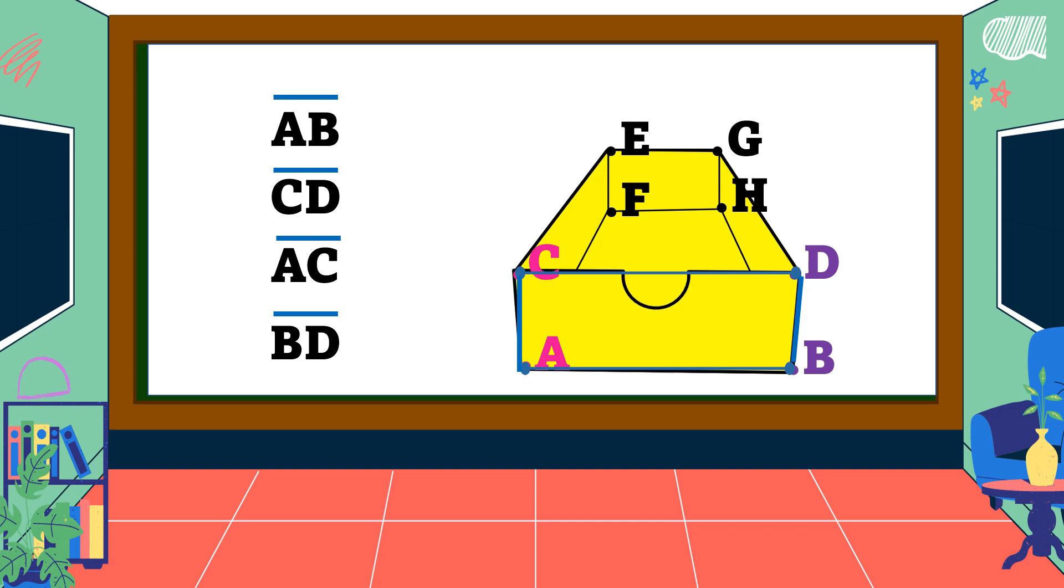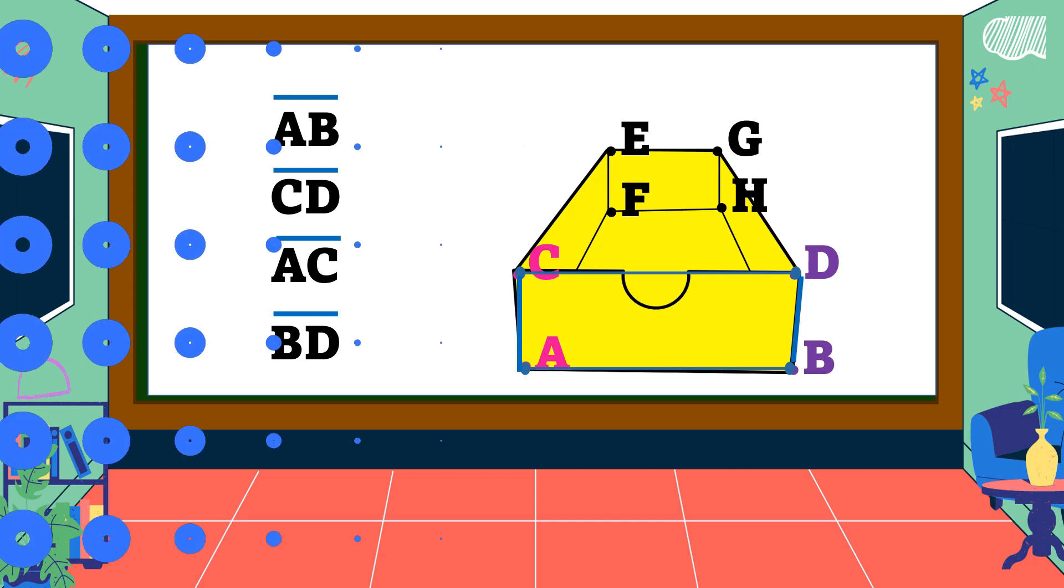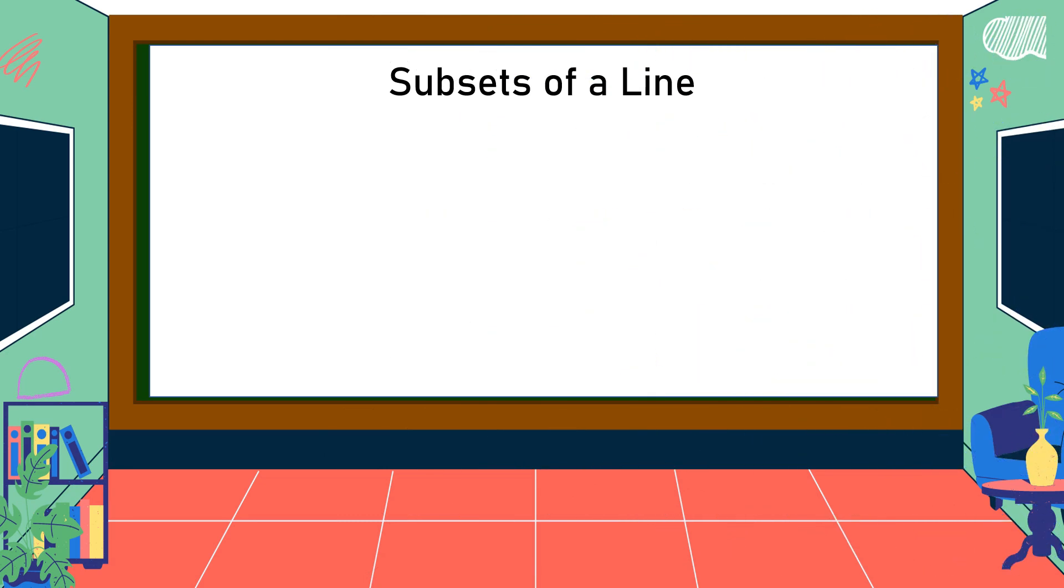The second subset of a line is a ray. This is ray XY.